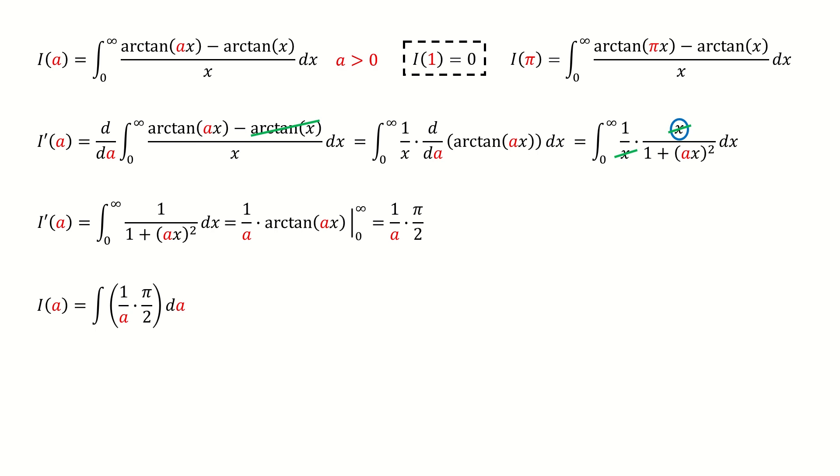And next, we do the integration to solve for i. So we got here, and don't forget the constant c. And then we plug in this condition to determine the constant c. So from this equation, we got c equals to 0.